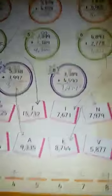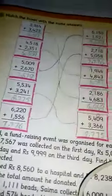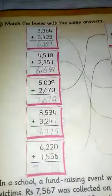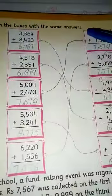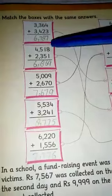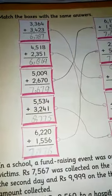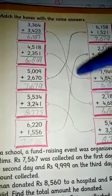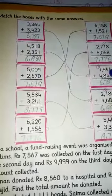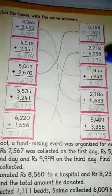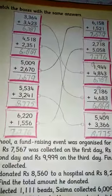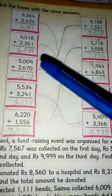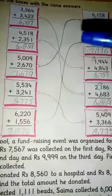Next page, question number 4: match the boxes with the same answers. You have to match the columns. This is the first column. You have to solve all the questions and match the ones who have the same answer.